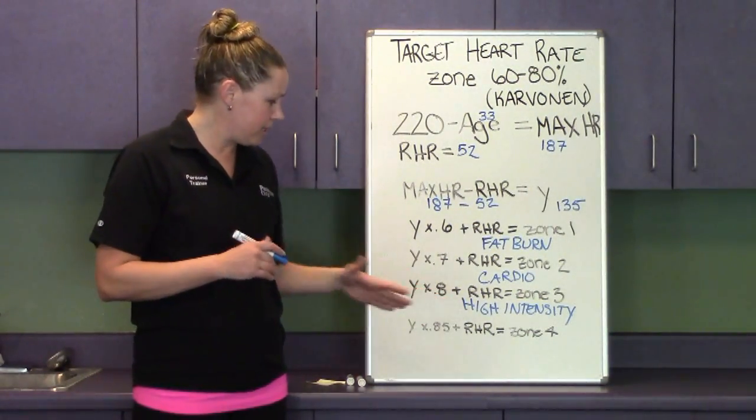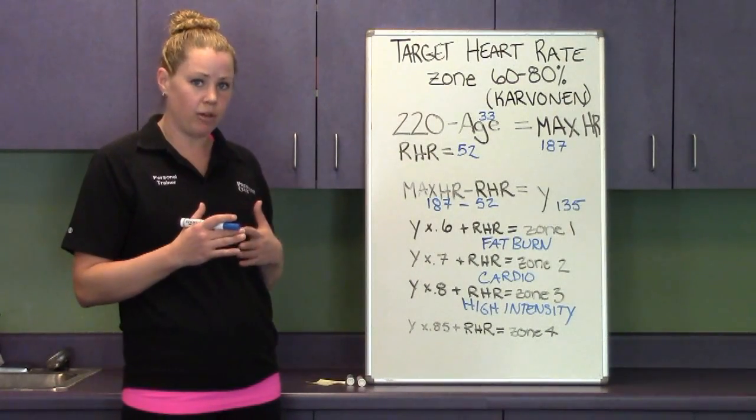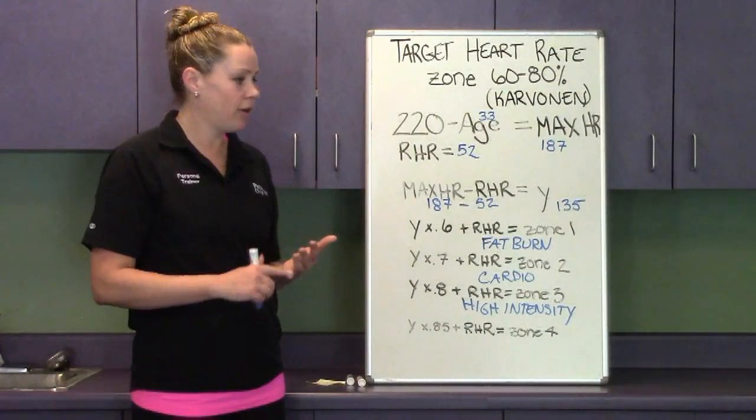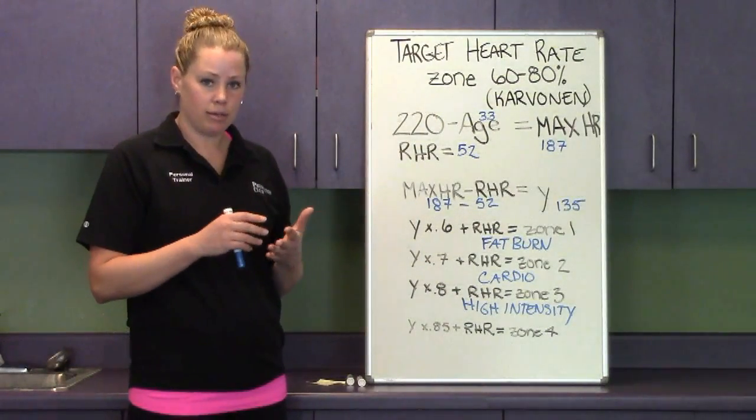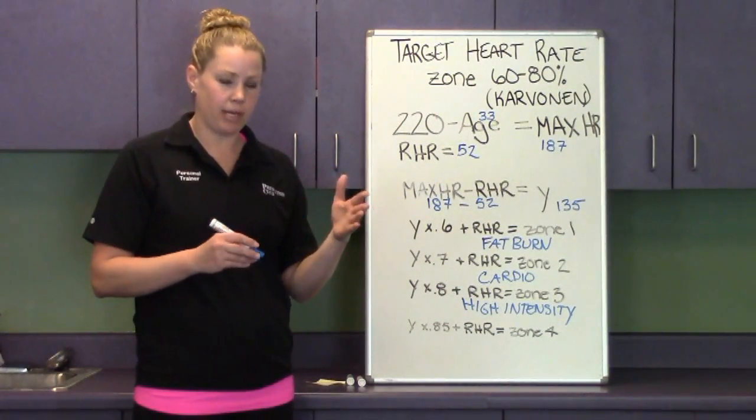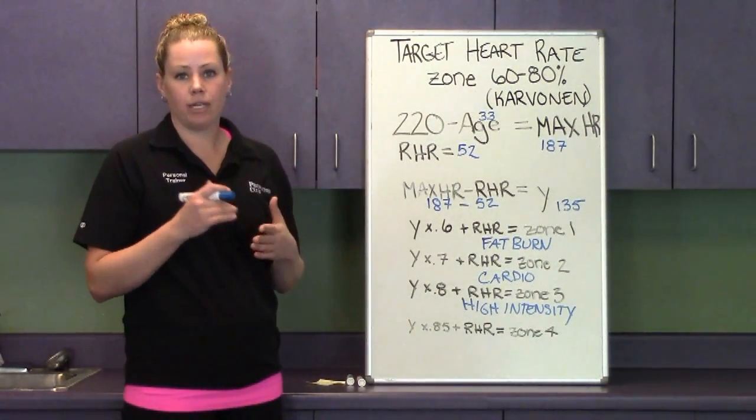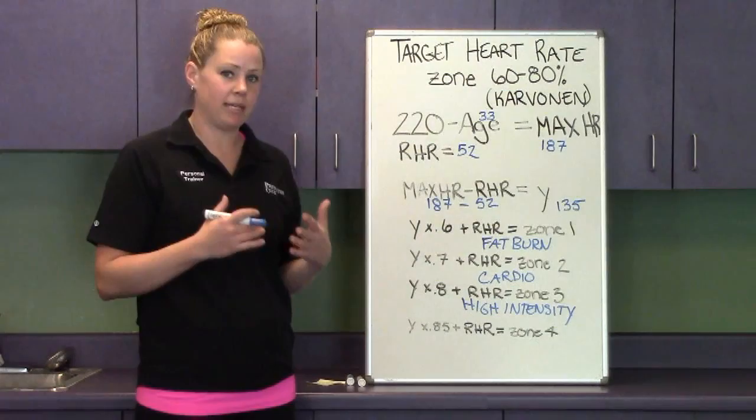High intensity zone is more if you're doing sprint intervals or trying to increase your overall speed by doing intervals. So you may start slow and then put in a sprint, slow down again, put in a sprint in order to increase your overall just basic pace.